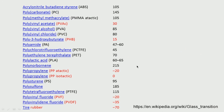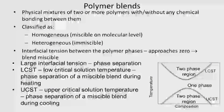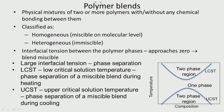You can measure Tg using a DSC — the phase change can be nicely seen in the DSC. The beauty of polymers is we can blend different polymers to achieve the required mechanical properties, required softening, required Tg values, and so on.